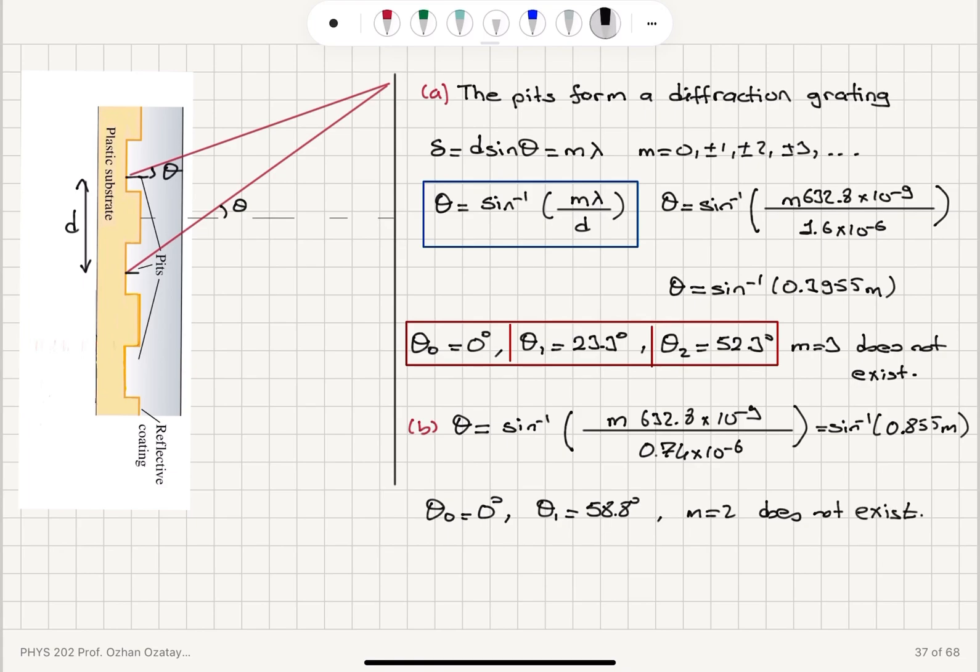And M equals greater or equal to 2, so that's what this means here. M greater or equal to 2 actually does not exist. Here, M greater or equal to 3 does not exist.